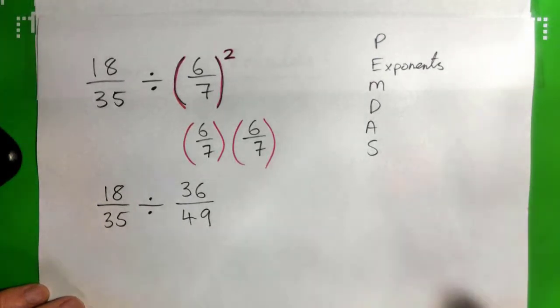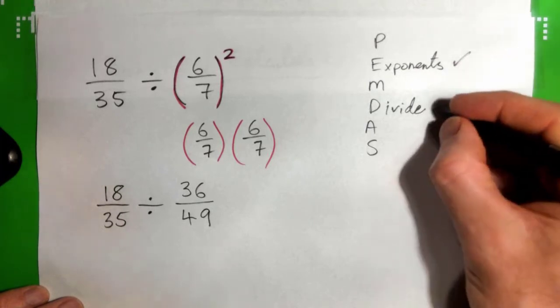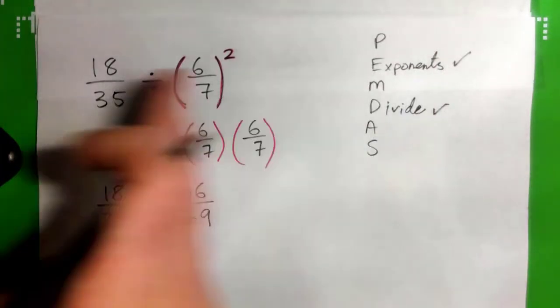So now all there's left to do is divide these fractions. If we think about the order of operations, we did our exponents and now we're dividing. So this is going nicely.